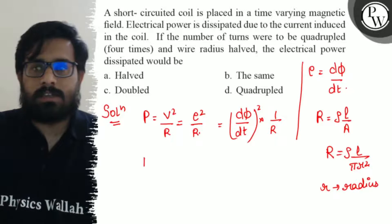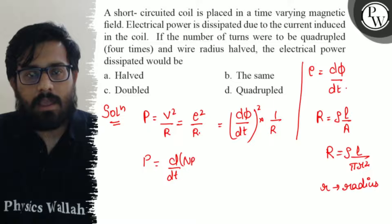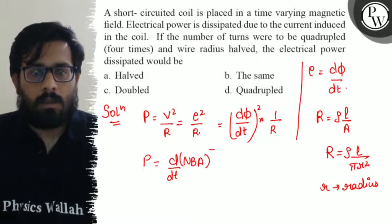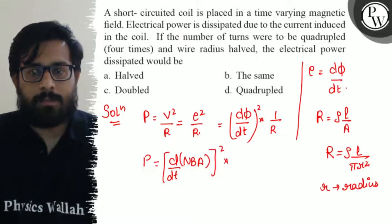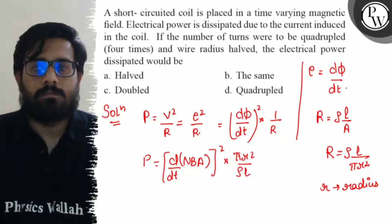Now, this can be further written as power is equals to [d(NBA)/dt]², and instead of R, this can be written as πr² upon ρL.